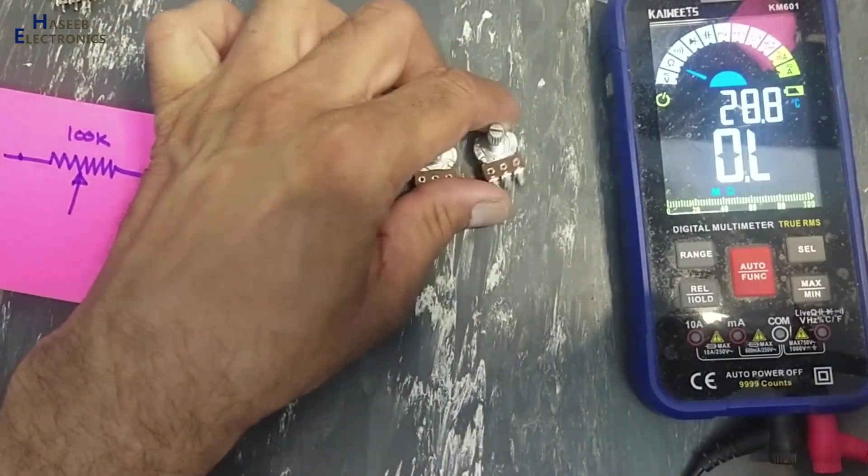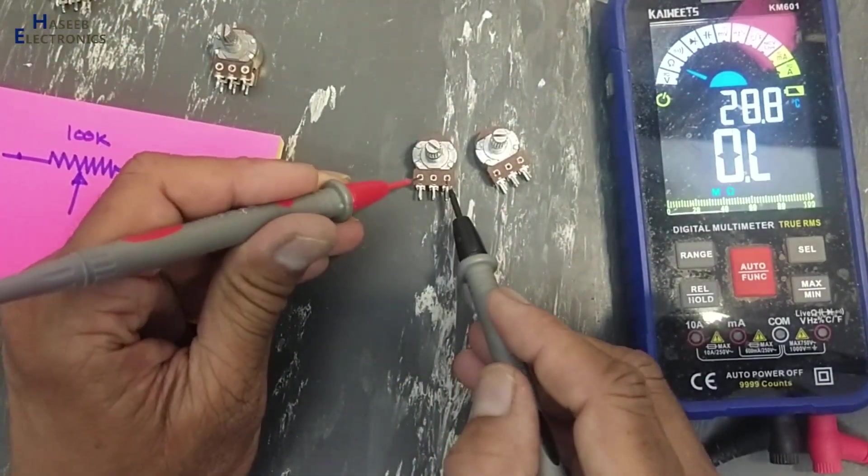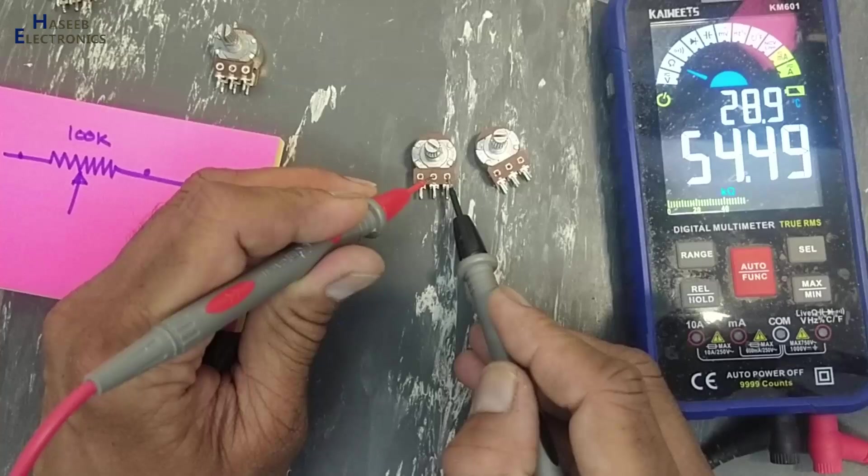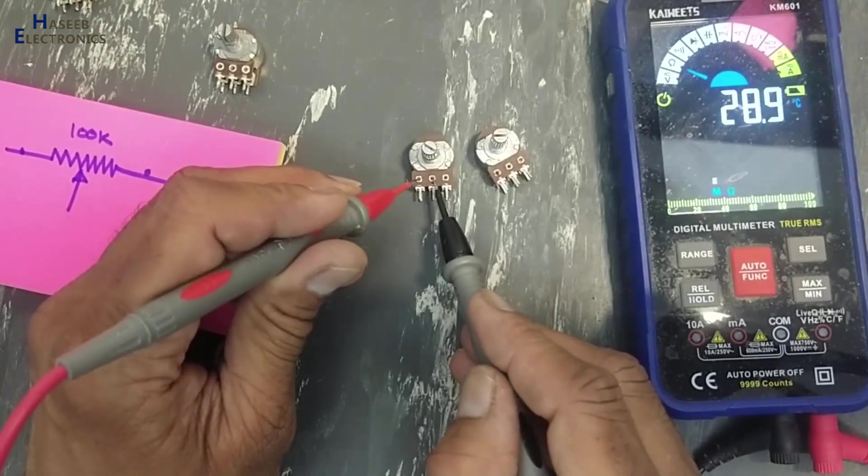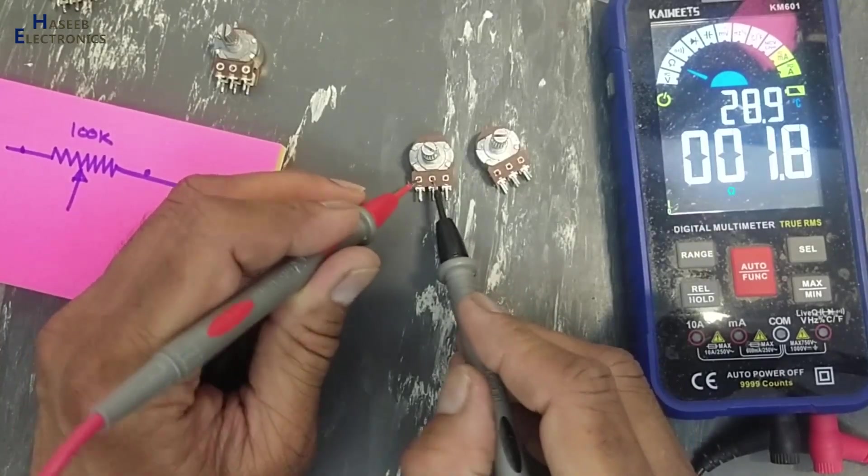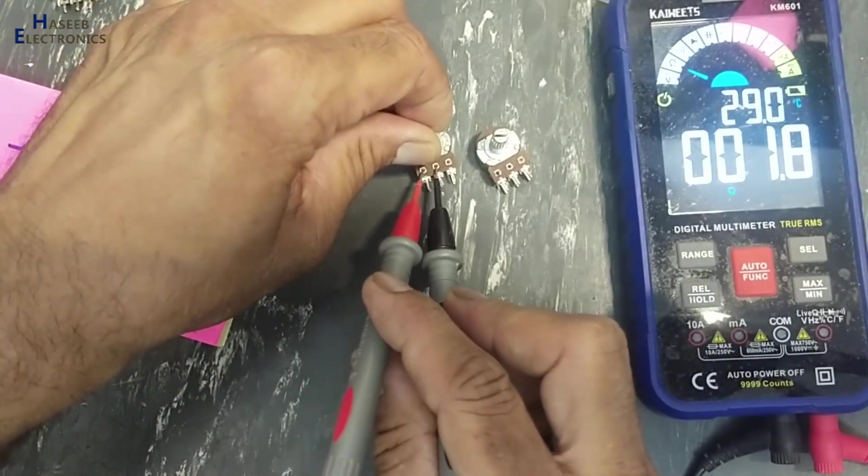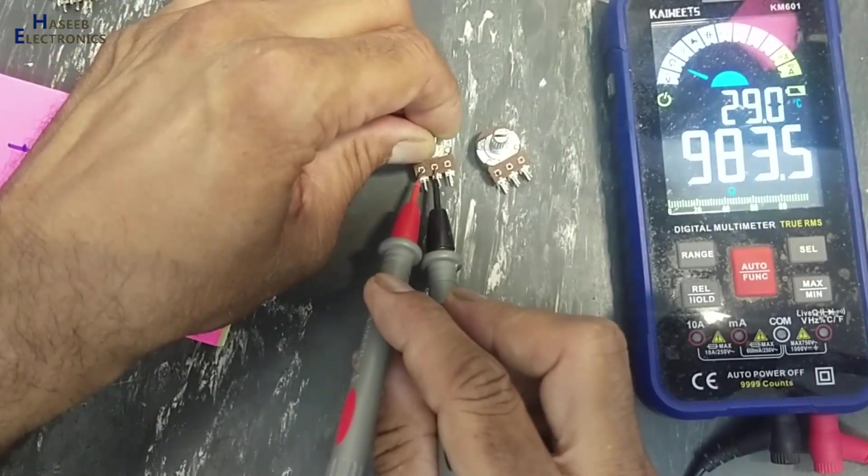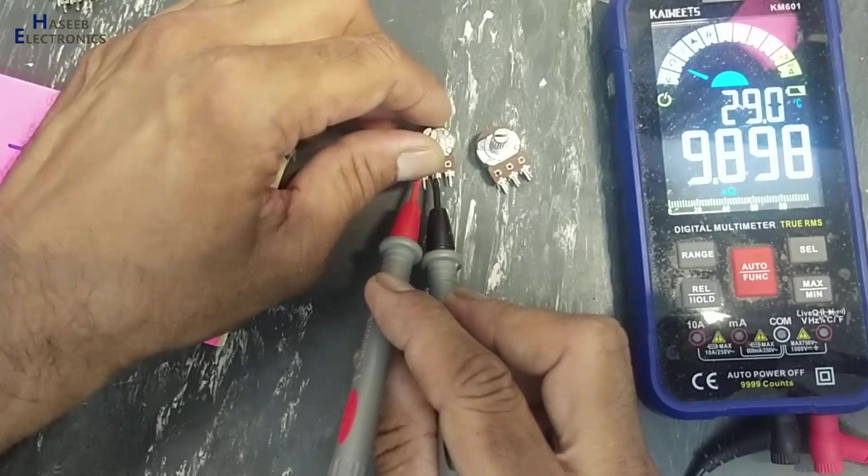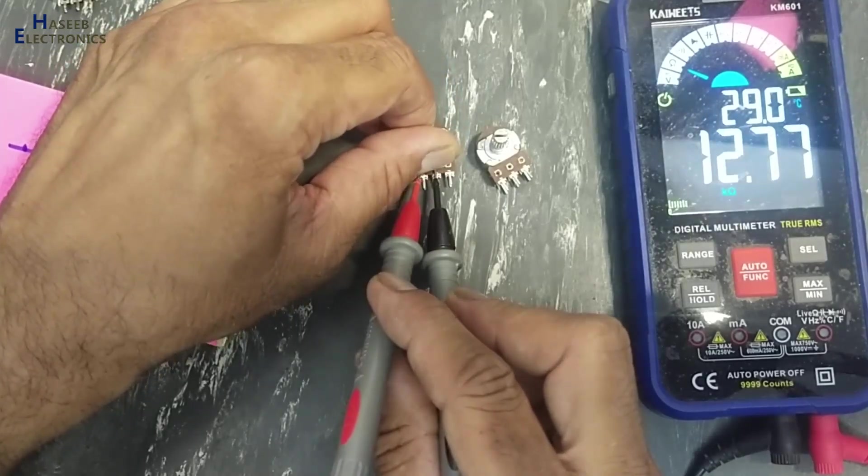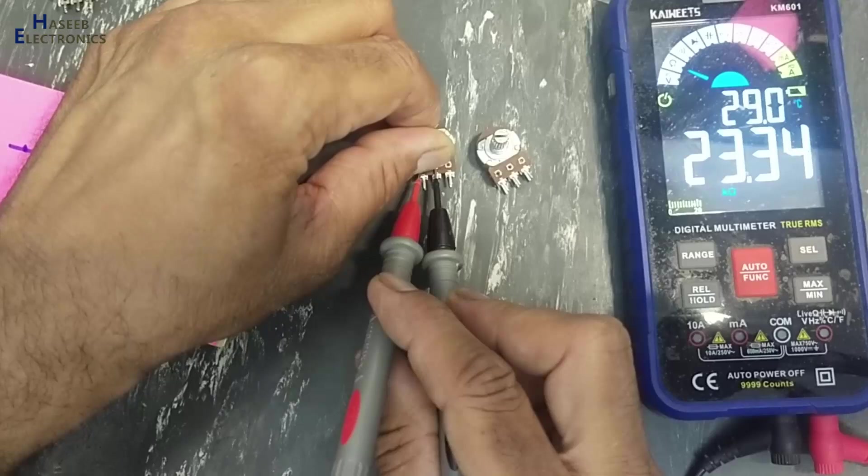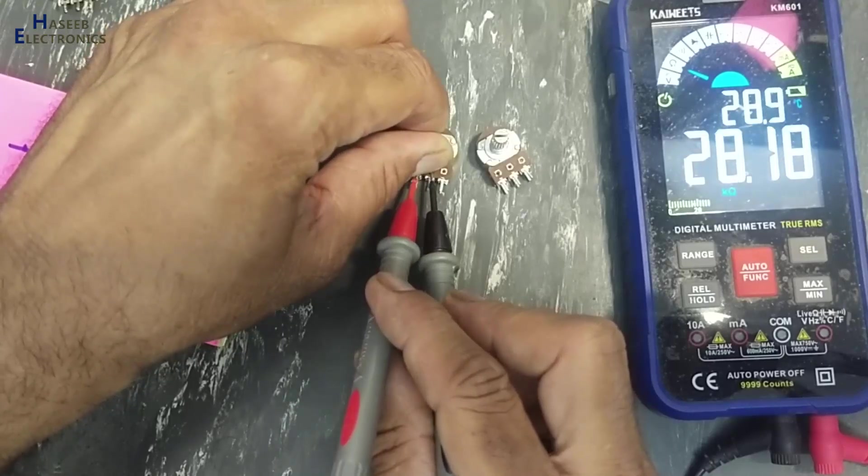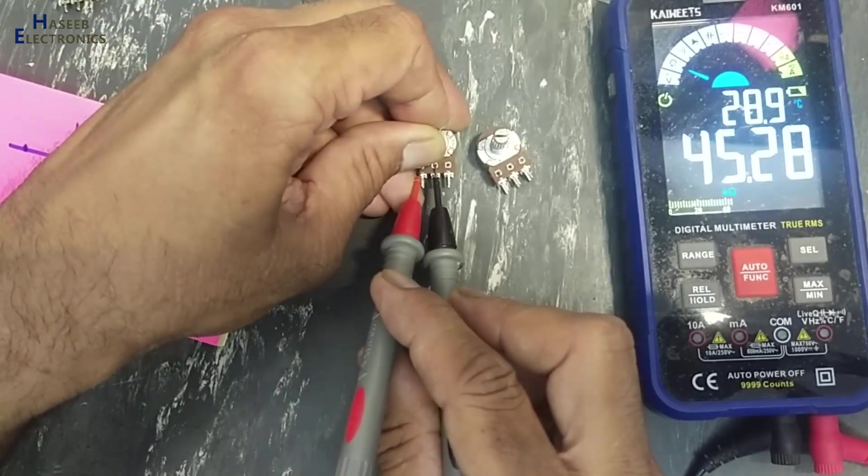When we purchase a new component, especially like potentiometers, we must verify its resistance, whether the resistance is good or not. If we check its linearity, it is dividing linearly, so its linearity test is good.